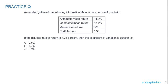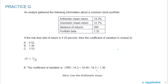Here's a practice problem to check your understanding. An analyst gathered information about a common stock portfolio: arithmetic mean return 14.3%, geometric mean return 12.7%, variance of returns 380, and portfolio beta 1.35. If the risk-free rate is 4.25%, the coefficient of variation is closest to A) 0.52, B) 1.36, or C) 1.53. This question has some red herring information — things that might confuse you.